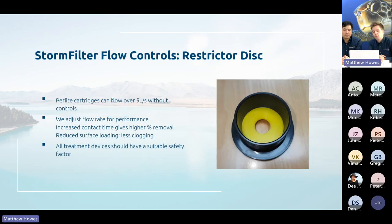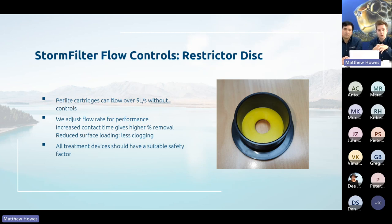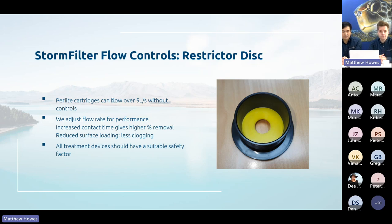Without any flow controls, a 69cm perlite cartridge can flow over 5 litres per second, but as a general rule we design to about 1.4 litres per second per cartridge. We throttle back the flow for better treatment performance — increased contact time gives higher TSS removal, and it means we need more cartridges, providing a larger surface area for the same sediment load so the device clogs less quickly. All treatment devices should have a suitable safety factor; the Storm Filter's is about 5, managed with restrictor disks. Rain gardens, for comparison, have a built-in safety factor of 2.